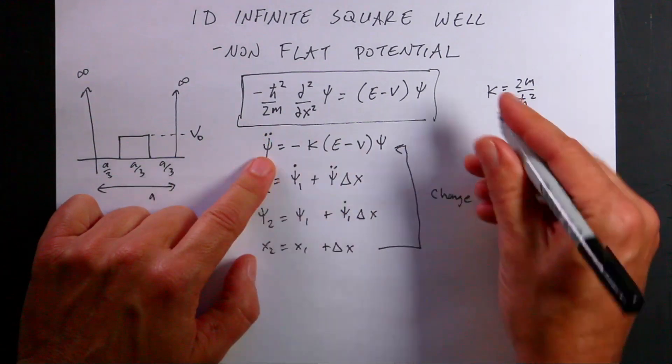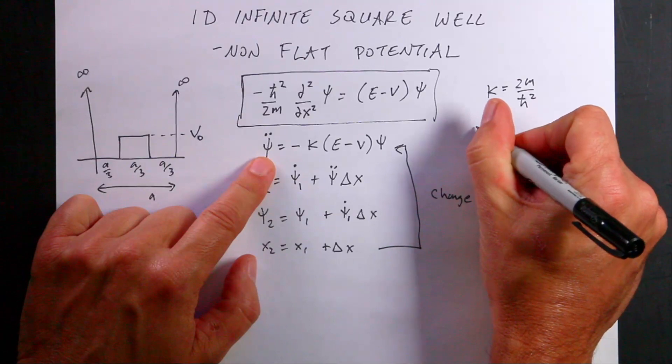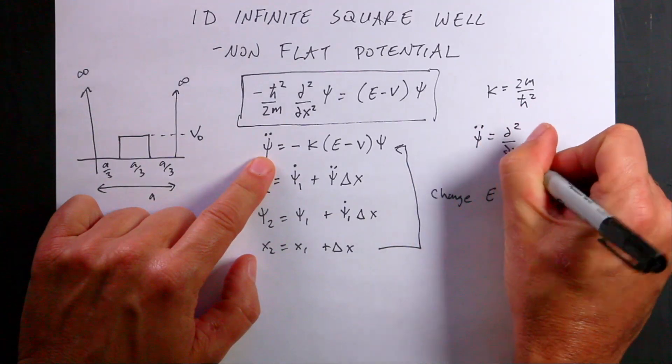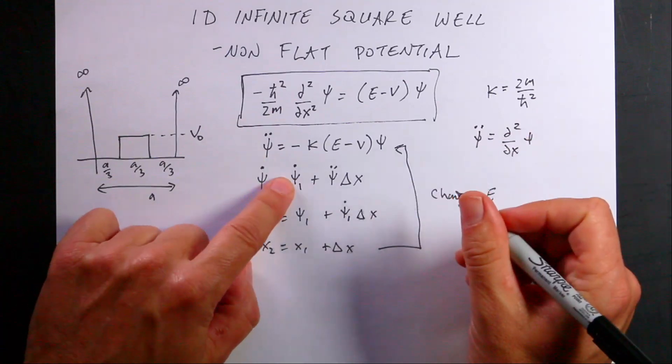Now I'm using this dot notation. I like this dot notation. So psi double dot is equal to the second derivative with respect to x of psi. And then psi dot is the first derivative.